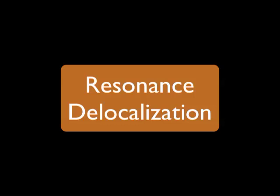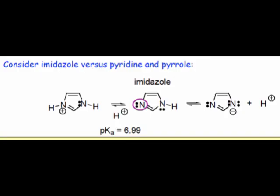The third key factor that influences the acidity and basicity of heterocycles is resonance delocalization in charged ring systems. Let's compare imidazole and pyridine first. The pKa of imidazole is about 7 and the pKa of pyridine is 5.2.